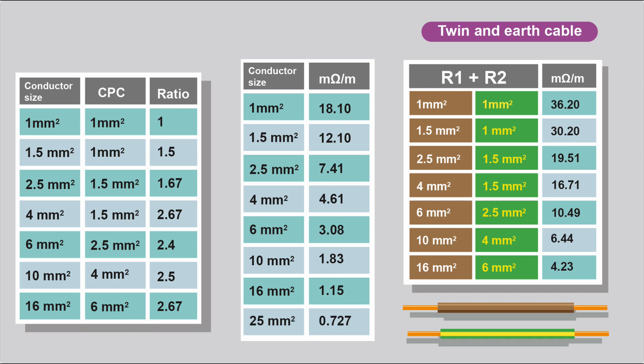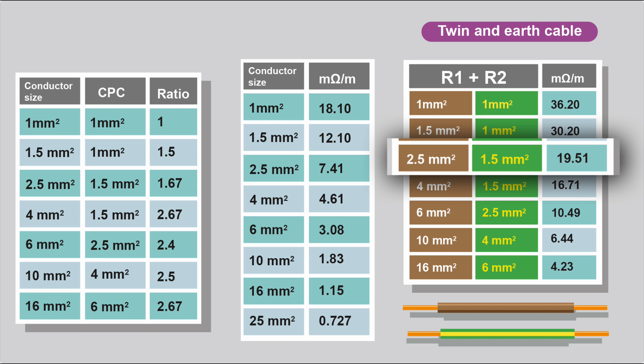If you recall before, the 2.5mm-squared conductor had a milliohms per metre rating of 7.41. We go to the same 2.5mm-squared conductor here. When it's combined with the 1.5mm-squared conductor, the CPC, we get a milliohms per metre value of 19.51.